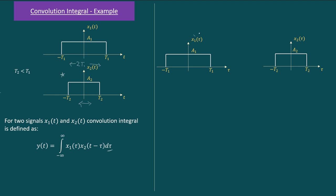These are the signals x1(τ) and x2(τ), both in the tau domain. The only difference is that the domain changes, but the plot of the signals remains the same. To evaluate the integral we require x1(τ), which is already available, but we also require x2(t − τ), and we only have x2(τ). To plot x2(t − τ), note that τ is the variable and t is a constant. We can write x2(t − τ) as x2(−τ + t), so we first shift the signal by t units and then flip it.